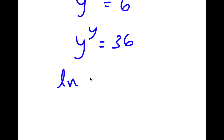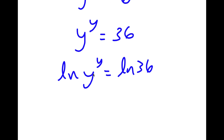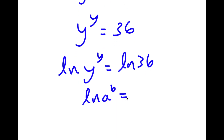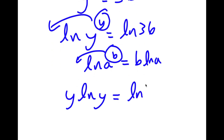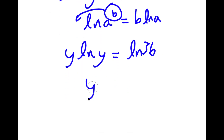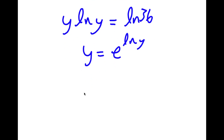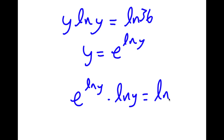Now if I take the ln on both sides, I get ln of y to the power of y equals ln 36. Using the log power rule, I can move y to the front, so y times ln y equals ln 36. Now y is the same thing as e to the power of ln y, because the e and ln cancel out. So I replace y with e to the power of ln y, giving me e to the power of ln y times ln y equals ln 36.